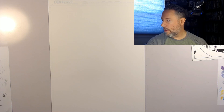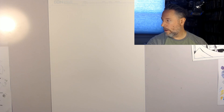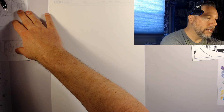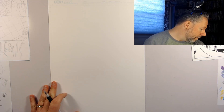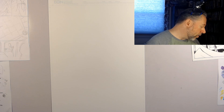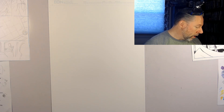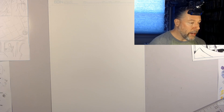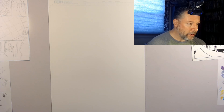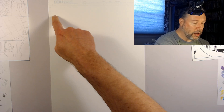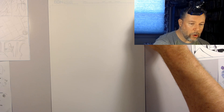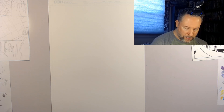The next step is to take the thumbnail sketch and keep it up on my board so I can reference it anytime. Then I draw out the actual panel borders so I know where everything is going to go. For that I need my ruler. I've got to figure out from my little sketch how much real estate I need. This drawing space is about 10 and a quarter to 10 and a half inches by 15 inches.